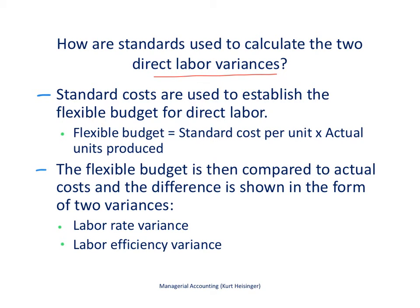We'll start by talking about standard costs. Standard costs are used to establish the flexible budget for direct labor. We talk about that in a separate video — how to create standard costs and how to calculate the flexible budget. The flexible budget is the standard cost per unit times the actual number of units produced.